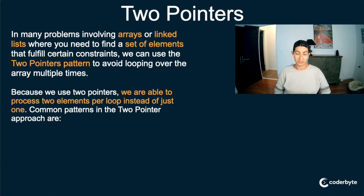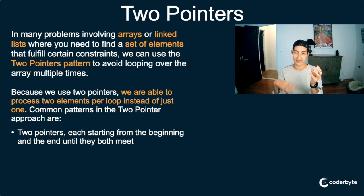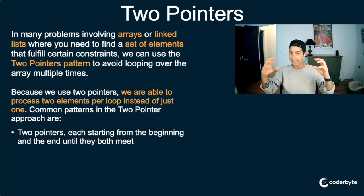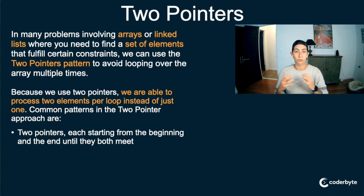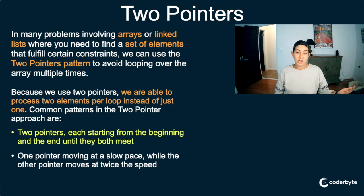Because we use two pointers, we are able to process two elements per loop instead of just one. Common patterns in the two-pointer approach are: two pointers each starting from the beginning and the end until they meet, and another pattern where one pointer is moving at a slow pace while the other pointer moves at twice the speed, depending on the problem.